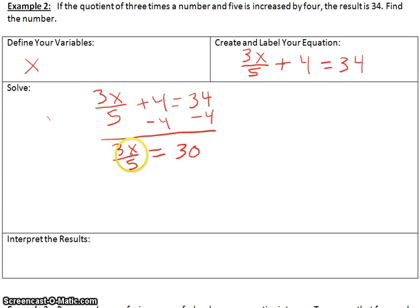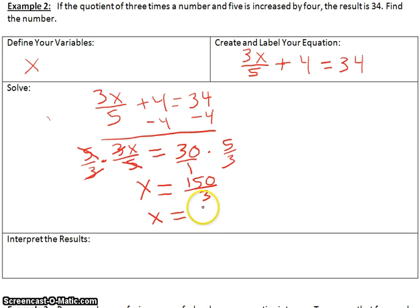We need to get X by itself, and we could do that by multiplying each side by the reciprocal of 3 fifths, which is 5 thirds. Now 5 thirds and 3 fifths, we simplify by cross simplification. 5 simplifies with 5, 3 simplifies with 3, leaving X. Now we take 30 times 5 thirds. We can make this 30 over 1. 30 times 5 is 150, 1 times 3 is 3. 150 divided by 3 is 50.